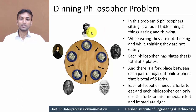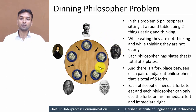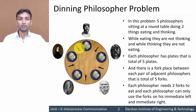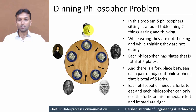So if we consider this philosopher, then this philosopher can access only this fork and this fork. This philosopher cannot access these three forks. Similarly, this philosopher can access only these two forks.